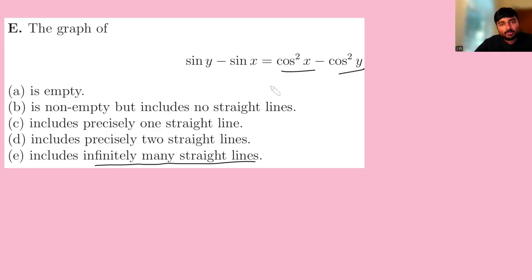So let's get rid of these cos squares and replace them with sine squared. So this can be one minus sine squared x minus one minus sine squared y, like so. Cancelling the ones and writing this as sine squared y minus sine squared x on the right-hand side.